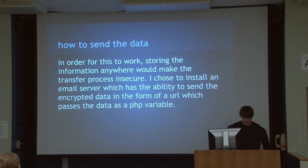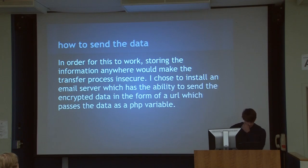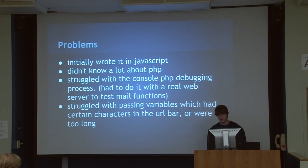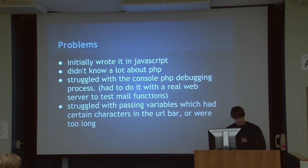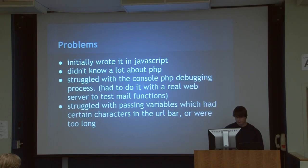This is my first time doing a cipher. I initially did it in JavaScript, then moved to PHP because JavaScript didn't really work for storing information securely — storing anything client-side would render the whole thing insecure. I created a PHP server on a registered domain, got an email server, and wanted to send encrypted data in a URL. I struggled with debugging PHP, and ran into issues where characters generated by the AES encryption — things PHP would recognize specially in the URL bar — would mess up the whole thing. I had to do some base conversions to handle that.